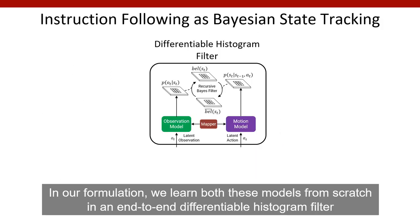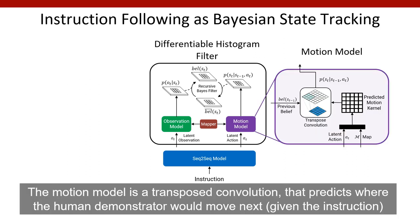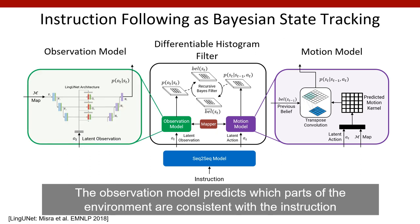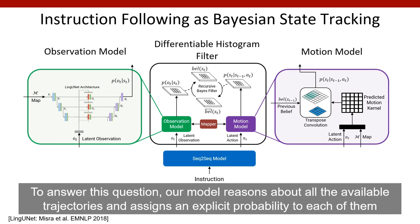In our formulation we learn both these models from scratch in an end-to-end differentiable histogram filter. Observations and actions in our model are latent vectors extracted from the natural language instruction. The motion model is a transposed convolution that predicts where the human demonstrator would move next given the instruction, and the observation model predicts which parts of the environment are consistent with the instruction. Overall we view instruction following as a tracking problem and ask what trajectory would be taken by a human following this instruction. Our model reasons about all available trajectories and assigns an explicit probability to each of them.